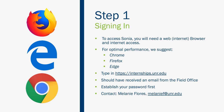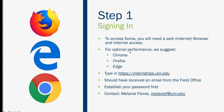You will need that password to log into Sonia. If you didn't receive that email, it means one of two things: one, your agency might not be in the system, or two, something's wrong with your username and I just have to fix it on my end. So just send me an email at MelanieF@unr.edu and I'll get you all set up. Let's see what logging in actually looks like.